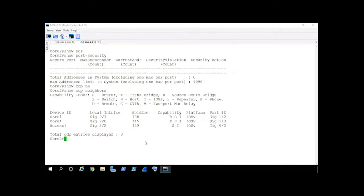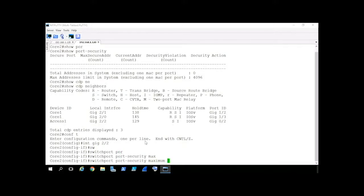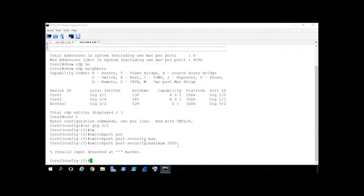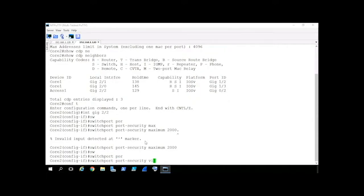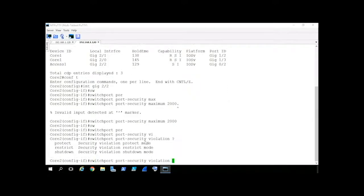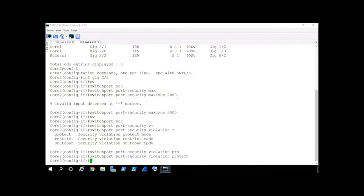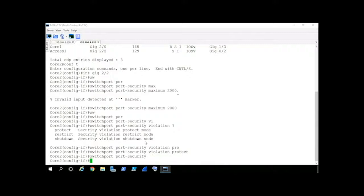And we'll go into configuration mode, and then interface gig 2/2, and switchport port-security, and we'll specify the maximum number of MAC addresses of 2,000. Didn't like that period at the end. And we'll specify the violation action. So switchport port-security, violation is going to be the action of protect. Great. And then we'll enable the feature just by using the command switchport port-security, and pressing enter.